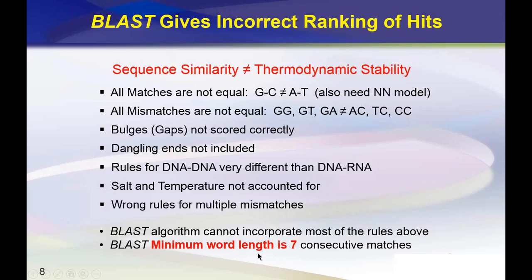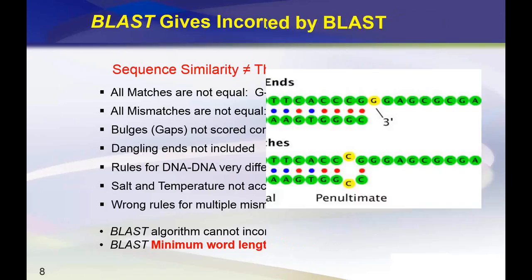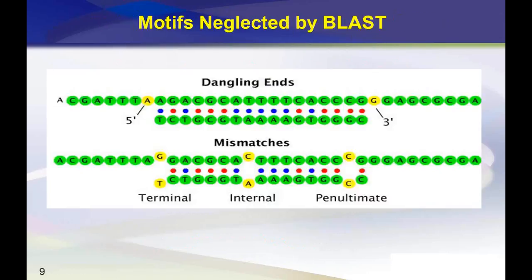Perhaps most importantly, BLAST has a minimum word length, meaning every hit must have at least seven consecutive perfect matches. If there's even one mismatch within that window of seven, BLAST will completely ignore the hit. This becomes extremely important in finding all of the thermodynamically stable hits.